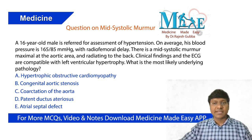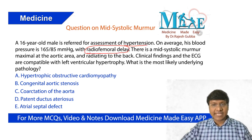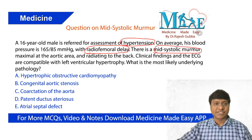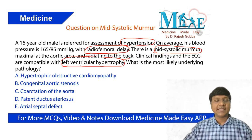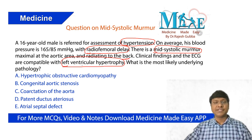Taking this clinical question, the very important point here is the presence of radiofemoral delay. The individual has hypertension. On auscultation, there is a mid-systolic murmur present in the aortic area radiating to the back. ECG is very much suggestive of left ventricular hypertrophy. These are the very important points in the clinical history and examination of this patient.